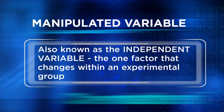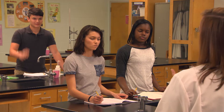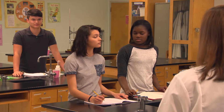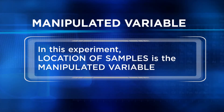Every experiment has a manipulated variable, also called the independent variable. The only difference in each of the samples is that we're collecting them from a different location. That's correct. When you set up this experiment, you decided where you'd collect the samples. The location of the samples is the manipulated variable.